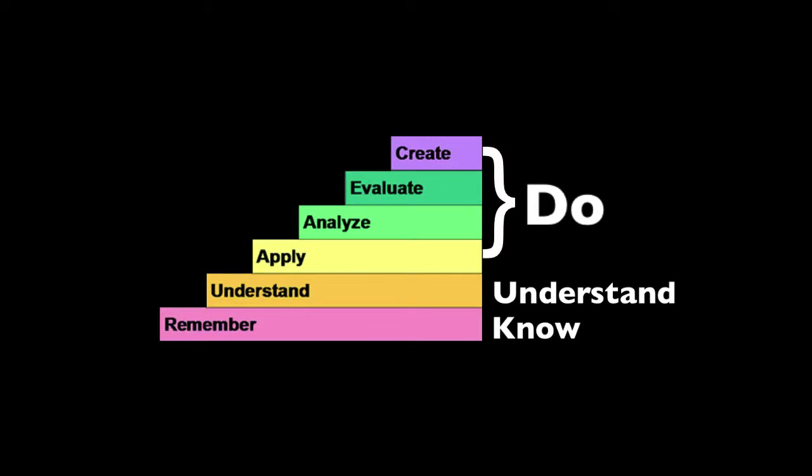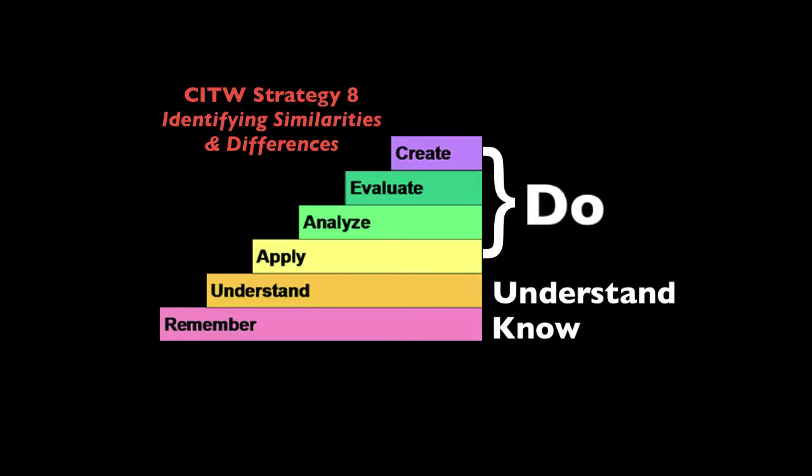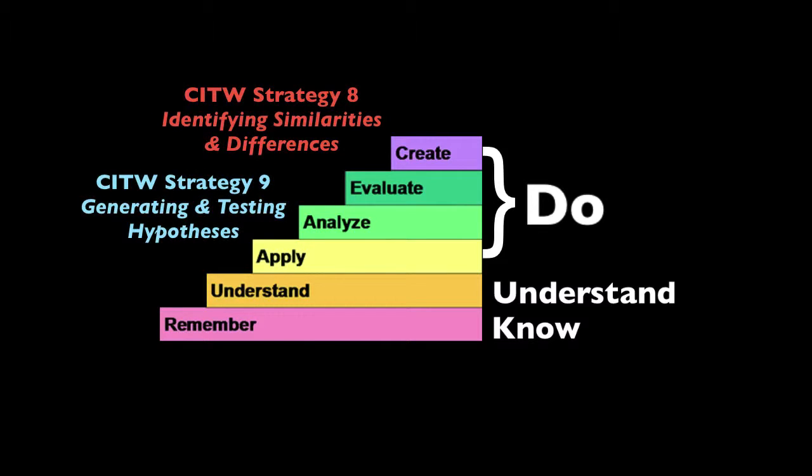The idea is that all learning objectives can be classified broadly: what do we want our students to know, understand, and be able to do? Remember there's an important difference between know and understand — knowing refers to recall of information or data, while understanding refers to why something is important. These broad categories fit perfectly with Bloom's Taxonomy. Two of the nine CITW strategies play a particularly important role in moving students to the highest levels of Bloom's: Strategy 8, identifying similarities and differences, and Strategy 9, generating and testing hypotheses.